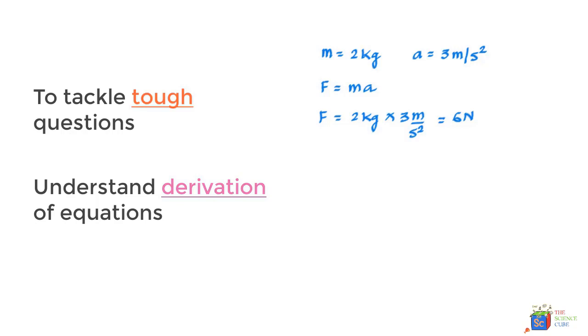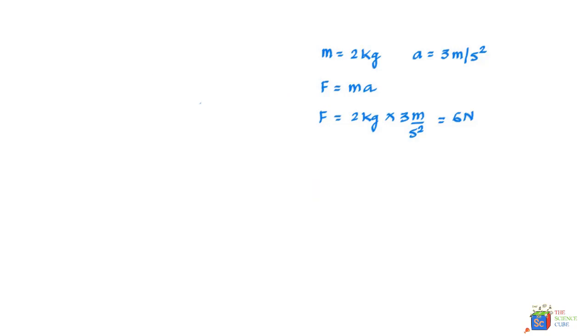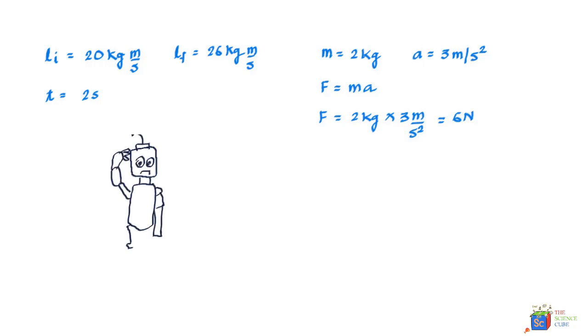So let us say if you were told that the momentum of a mass changed from 20 kilogram meters per second, Li = 20 kg·m/s, and the final momentum was equal to 26 kilogram meters per second. And let us say this happened in time t equal to two seconds. And the question is what is the force on the object? Well, you may scratch your head and wonder if f equals ma can answer this question.